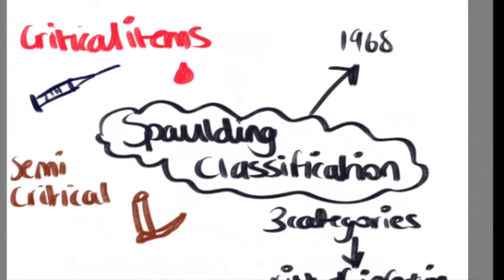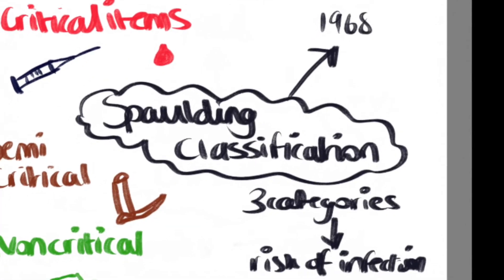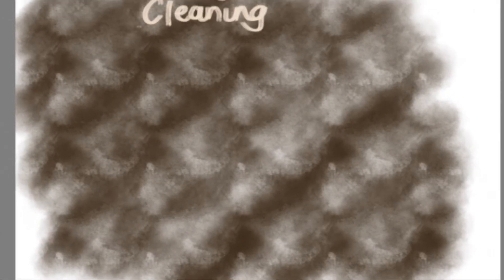Semi-critical devices require disinfection as intact mucous membranes may be susceptible to infection. Non-critical items do not come into contact with mucous membranes, and therefore are deemed non-critical. For example, blood pressure cuffs or pulse oximeters. There is a low risk of infection transmission, therefore cleaning is usually sufficient.